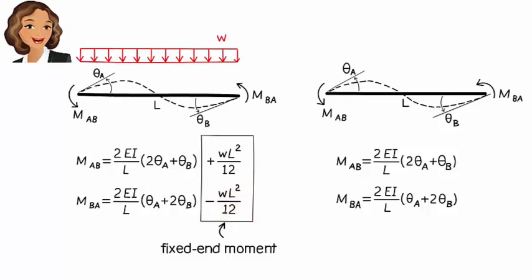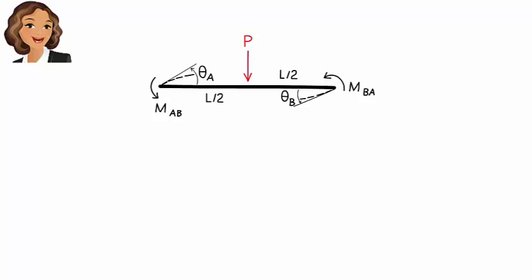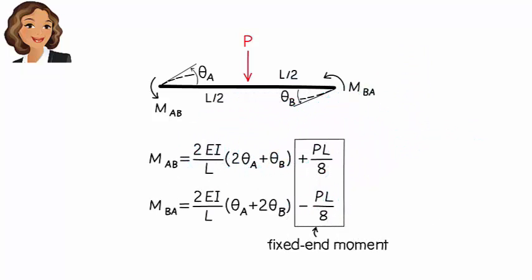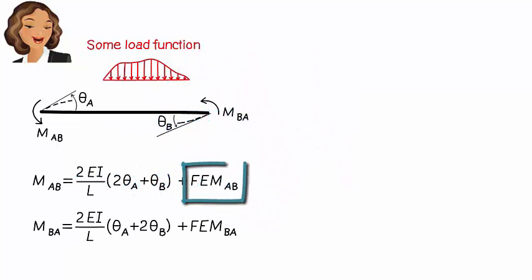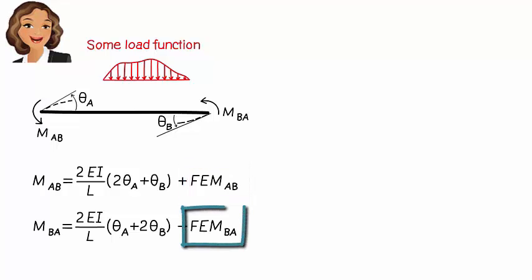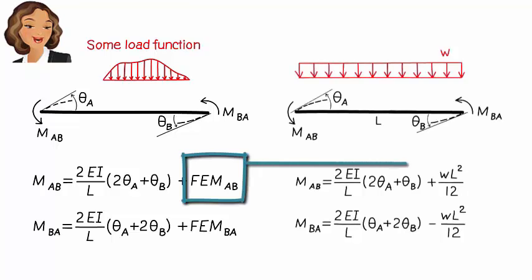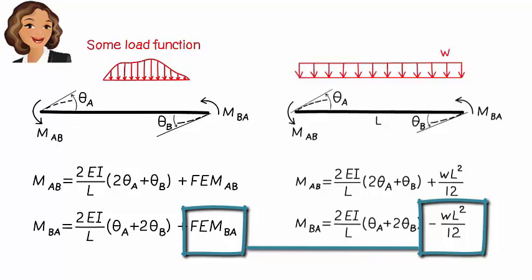Obviously, different loads give us different fixed-end moments. For example, if we subject the beam segment to a downward concentrated load P at mid-span, the fixed-end moments become different values. Generically, we can write the slope-deflection equations using FEM-sub-AB for fixed-end moment at end A and FEM-sub-BA for fixed-end moment at end B. So, for a uniformly distributed load W, FEM-AB is positive WL-squared over 12, and FEM-BA is negative WL-squared over 12.